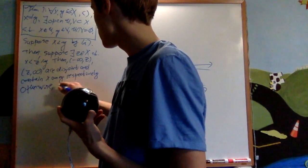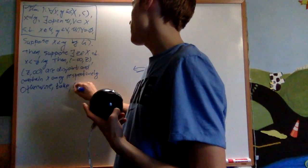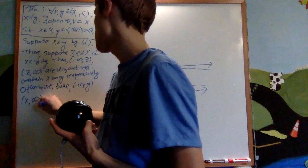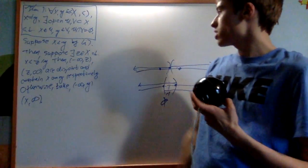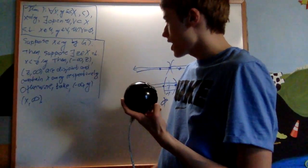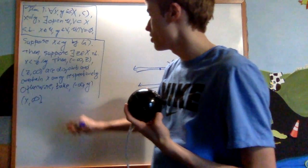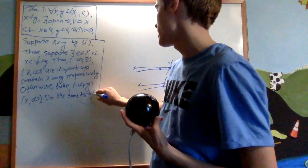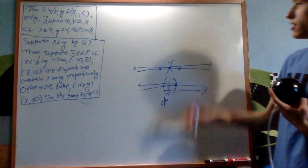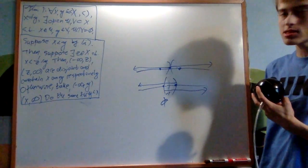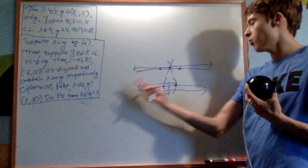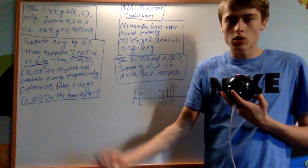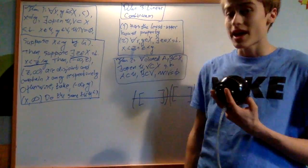So otherwise take (-infinity,y) and (x,infinity). And so what about if y is less than x? Well you just switch the two. So do the same for y less than x. So basically the method we used is either we split it in between those two points or we just take the open intervals with endpoints at those points. Hopefully this explains order topologies in a roundabout way. And that's it.